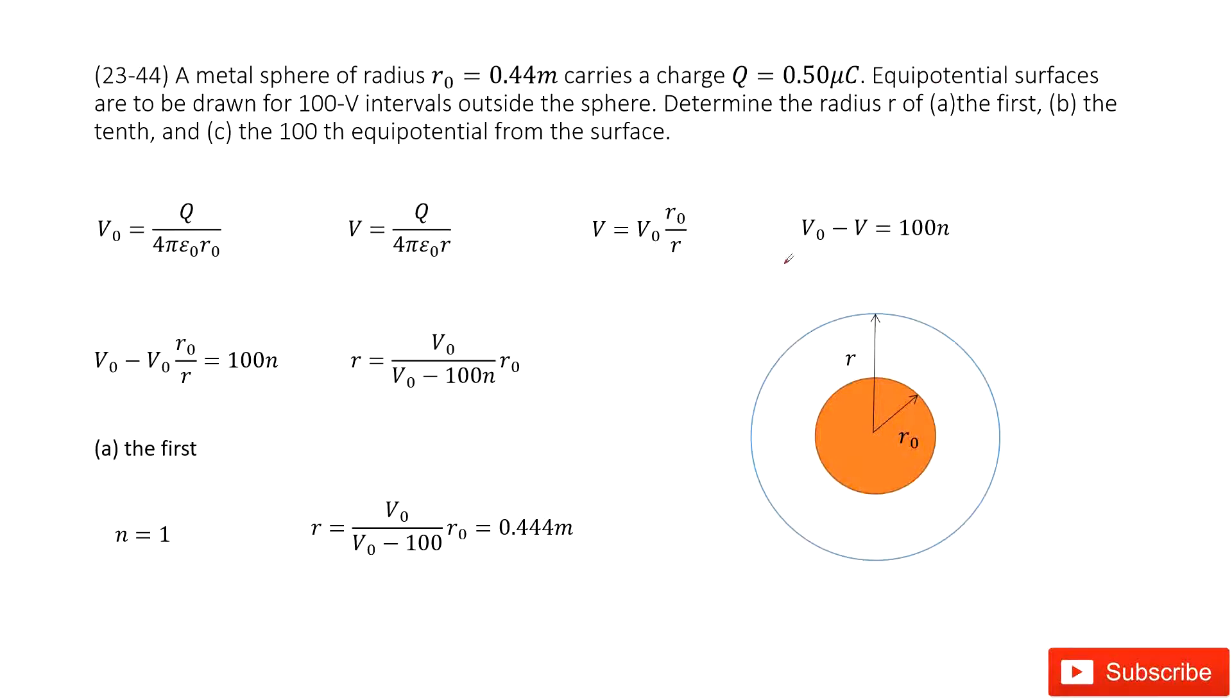And then it is just a 100 volts interval outside of the spherical. So we draw this equipotential surface at this blue circle, right? And the radius is R.